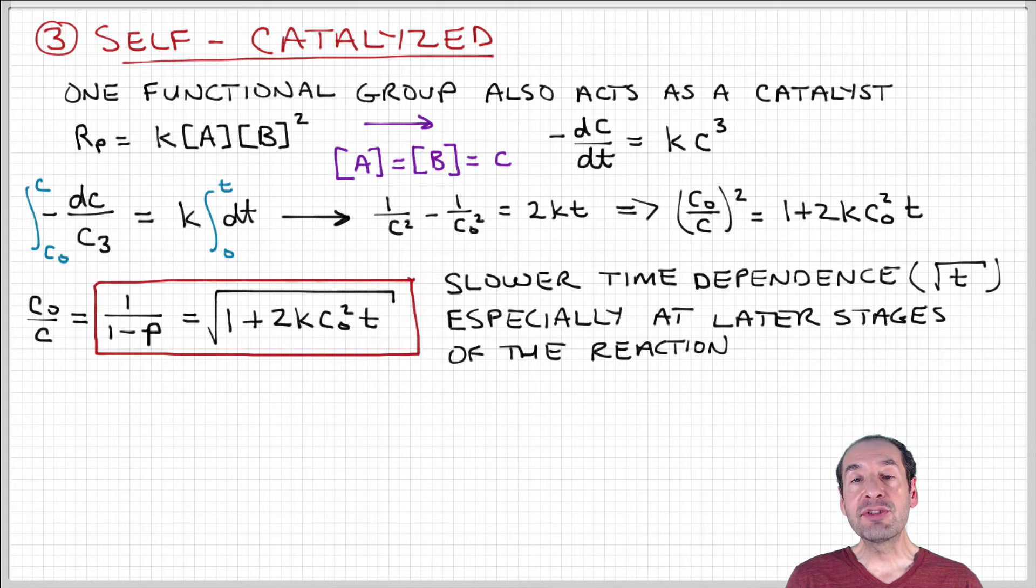And this makes sense because remember that as we're consuming monomer, we're also consuming catalyst. So in the later stage of the reaction, when there's less monomer present in the sample, those are going to be the times when the reaction rate would be most affected by consumption of monomer B.